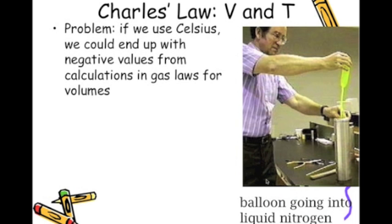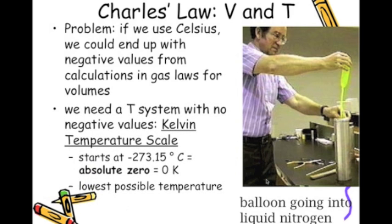Now, the problem that we have with Charles' law problems is that if we use Celsius, we could end up with some negative values for the calculations and the gas laws for the volume. And we need a temperature system with no negative values, so we have to use the Kelvin temperature scale. It starts at negative 273.15 Celsius, which is absolute zero.